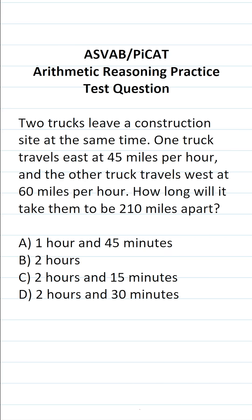In this case, it's going to be helpful to solve this one by using a diagram. Here's the construction site they're leaving. We know one truck is going to be traveling east at 45 miles per hour and another truck is going to be traveling in the opposite direction, west, at 60 miles per hour. And we want to know how long it's going to take them to be a distance of 210 miles apart.